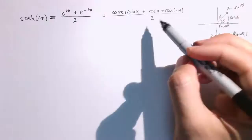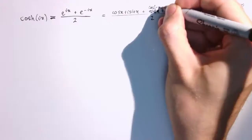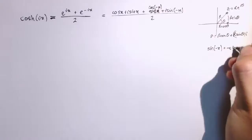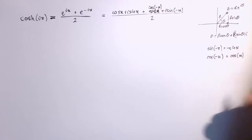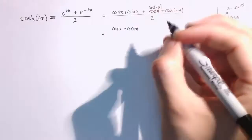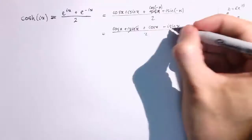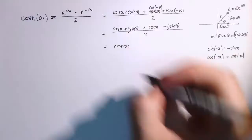We also need to know that sin of minus x is minus sin of x, and that cos of minus x is just cos of x — cos is an even function and sin is an odd function, as you can see from their graphs. So the expression becomes: cos x plus i sine x, plus cos x minus i sine x, all divided by 2. The sine terms cancel, leaving 2 cos x over 2, which is just cos x. So cosh of ix equals cos of x.